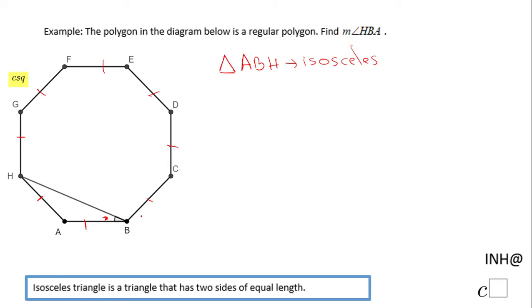So that means angle HBA and this angle AHB are the same. I can call them both X. And if we can find this angle, angle A, then we can find the other two angles which I said they are the same.